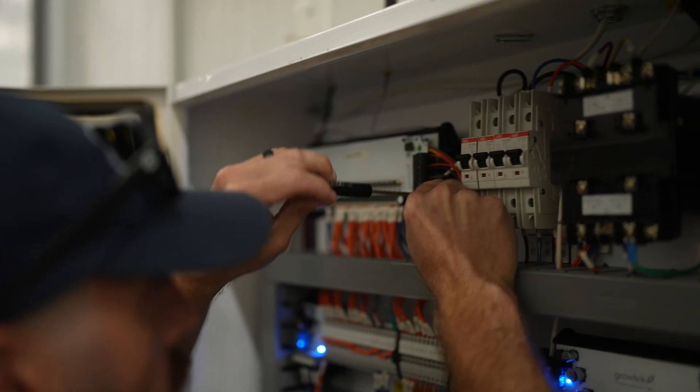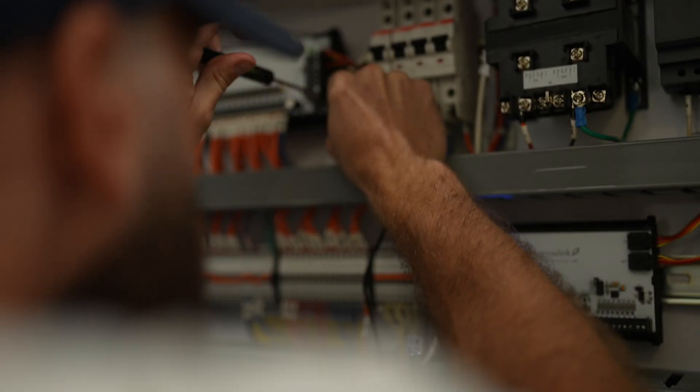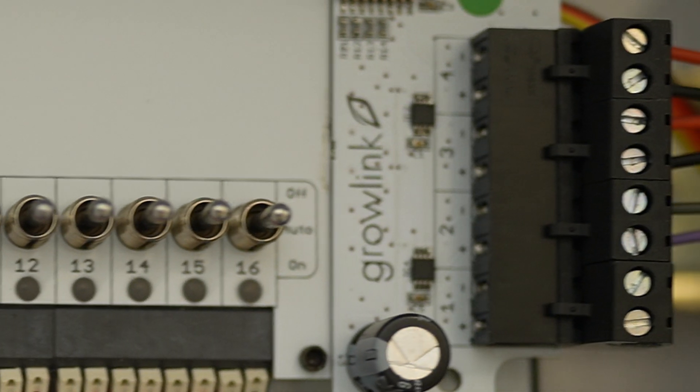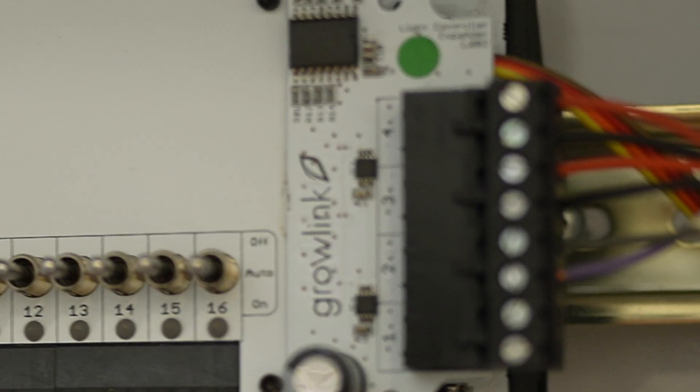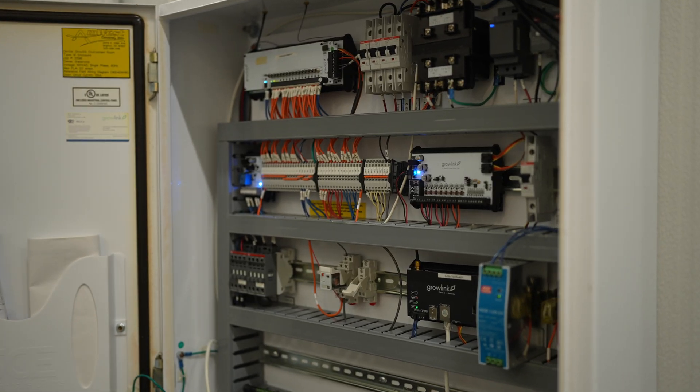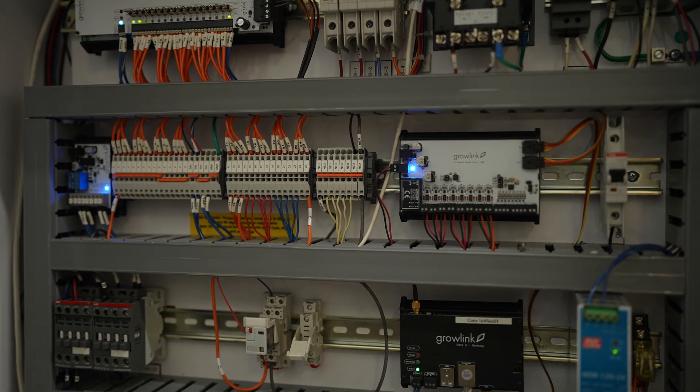So what you're going to need is a small flathead screwdriver. You'll begin by taking either one of the wires, finding the negative port of the terminal block. Take the white wire, push it in, tighten it down with your flathead screwdriver. Give it a nice little tug, make sure it's secure. Then repeat the same thing with your positive wire. Push it in, tighten it down, you should be good to go.